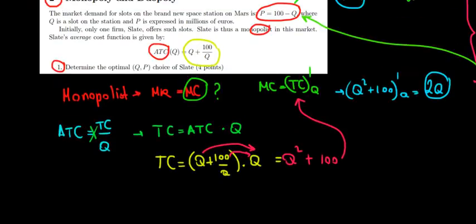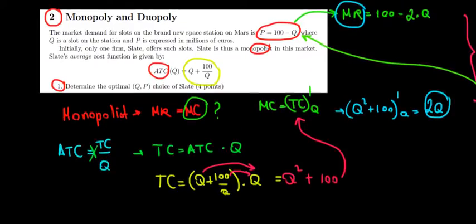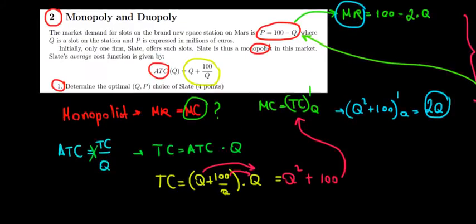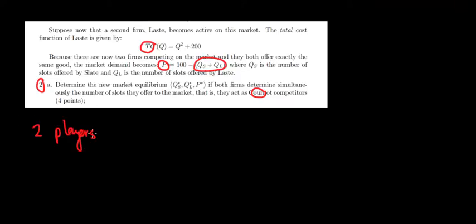First of all, let's understand what's happening here. We had a monopolist in question A — recall from the first question we had a monopolist, we found a quantity and a price. Now we have a duopoly — two players in the market competing in the style of Cournot. What is this Cournot game and what does it mean?